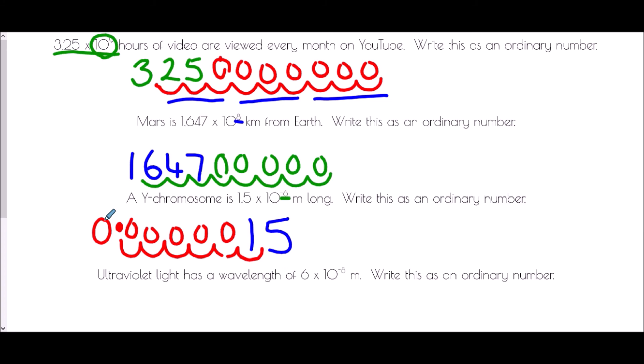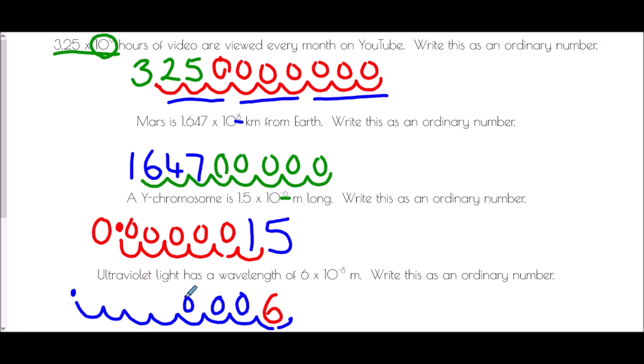Ultraviolet light has a wavelength of 6 × 10⁻⁸ meters — write this as an ordinary number. Starting with the digit 6, the decimal point is after the 6. We move eight places to the left: 1, 2, 3, 4, 5, 6, 7, 8. Adding all placeholder zeros gives 0.000000006 meters — six preceded by eight zeros after the decimal point.